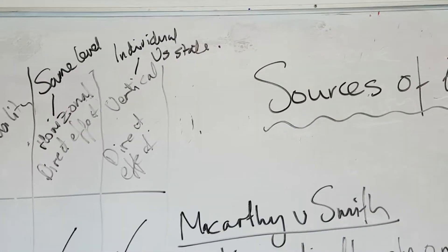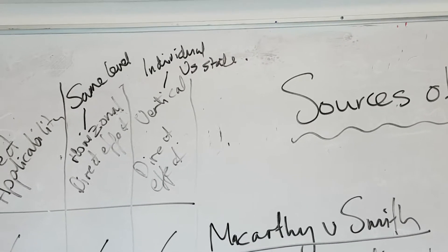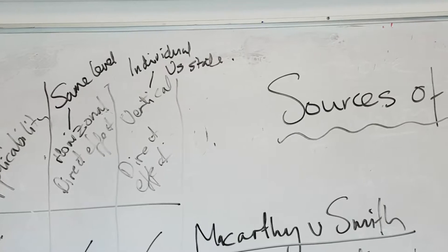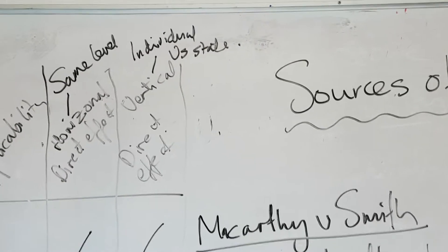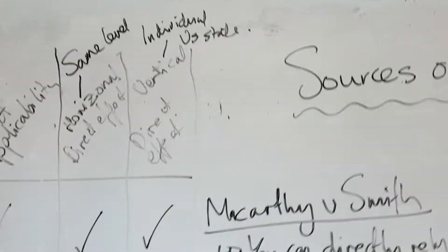Whereas vertical direct effect is when you're going up against somebody above you, such as a state or part of the state.